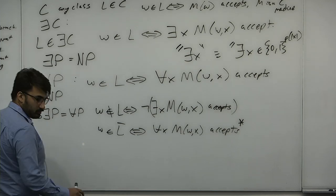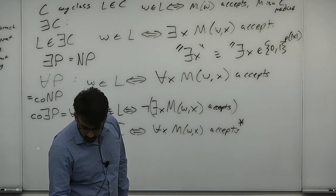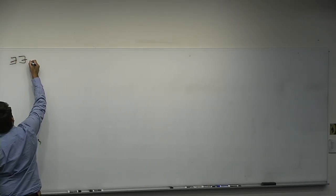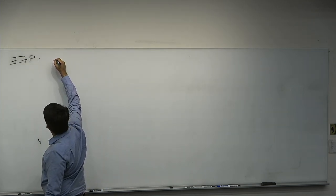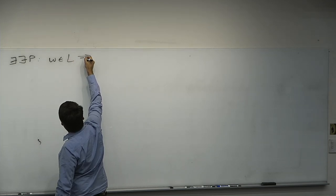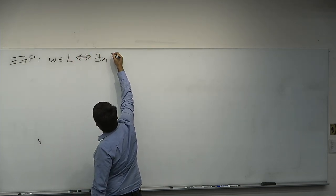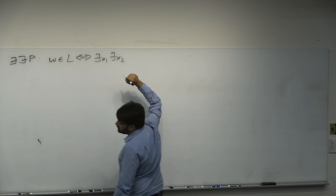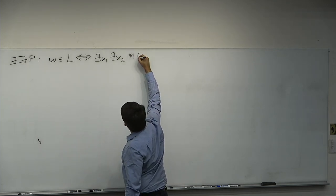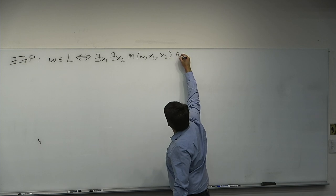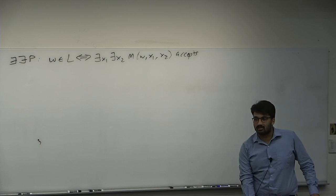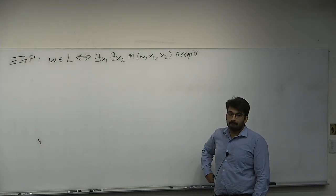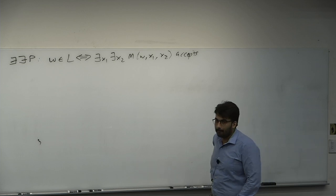What about Exist-Exist-P? What is Exist-Exist-P in general? We surger in two quantifiers. We have W is in L if and only if there exists some X1 and there exists some X2 — both polynomial size — such that M on W, X1, X2 accepts. Conjecturally, what is Exist-Exist-P?